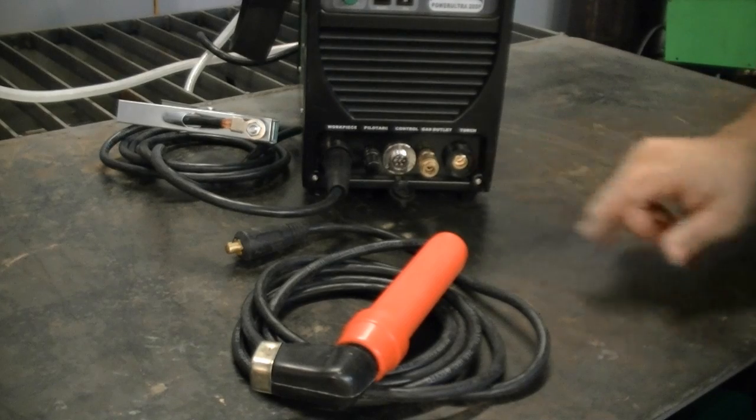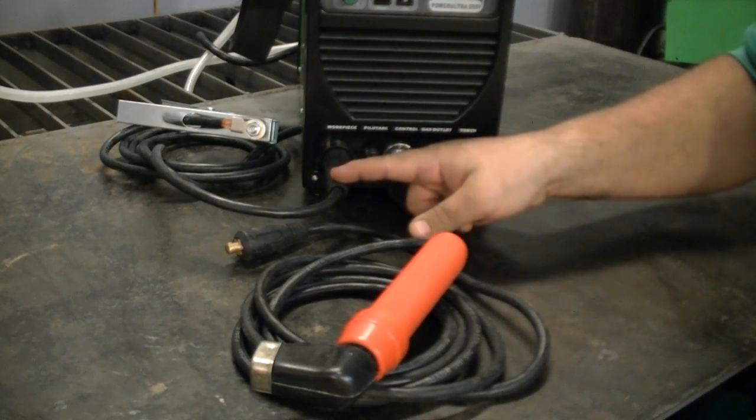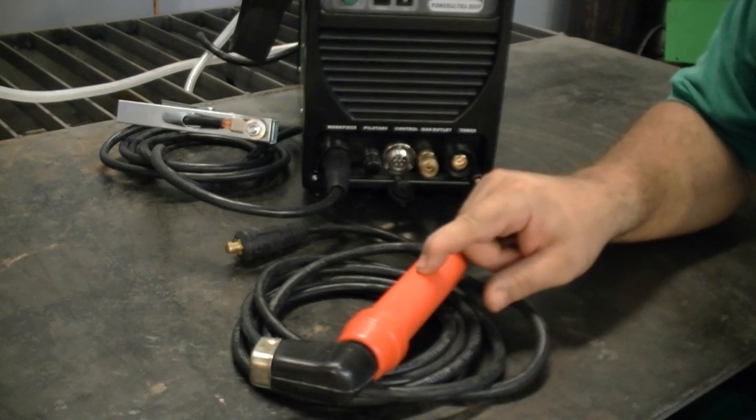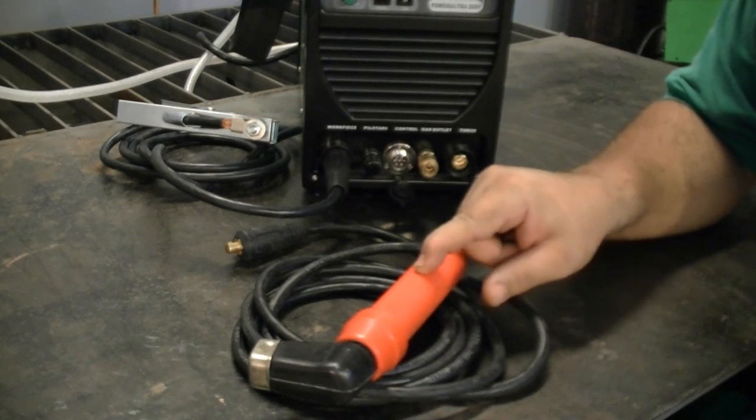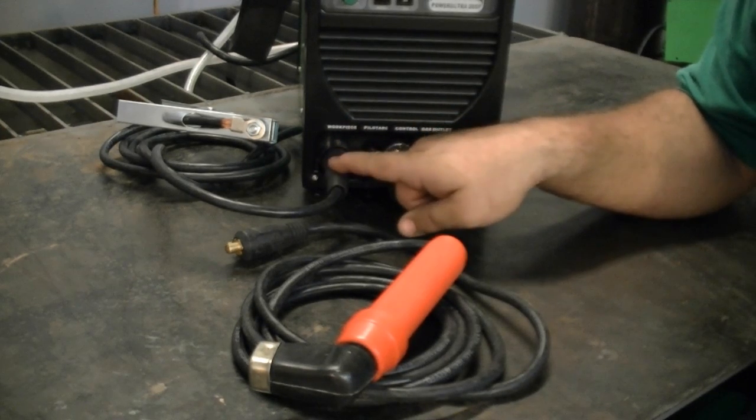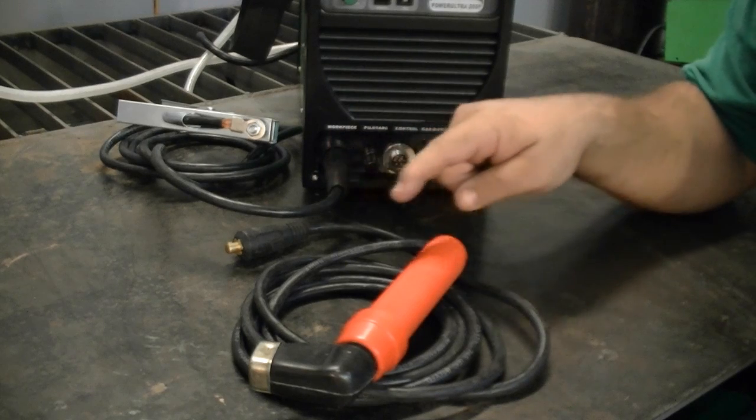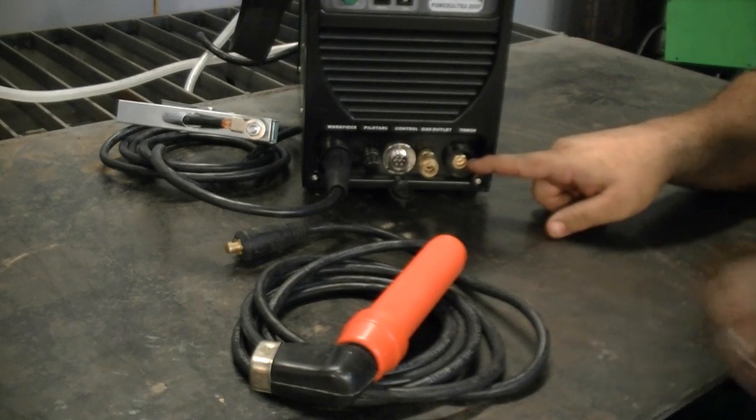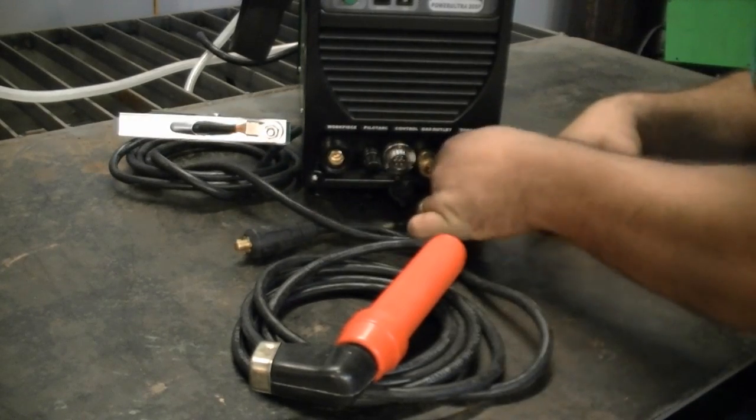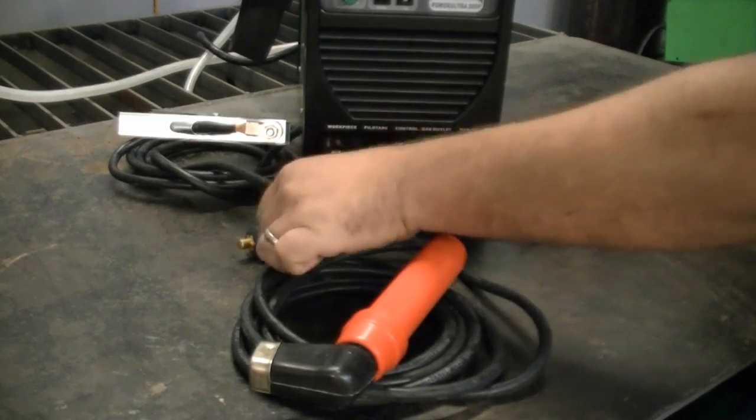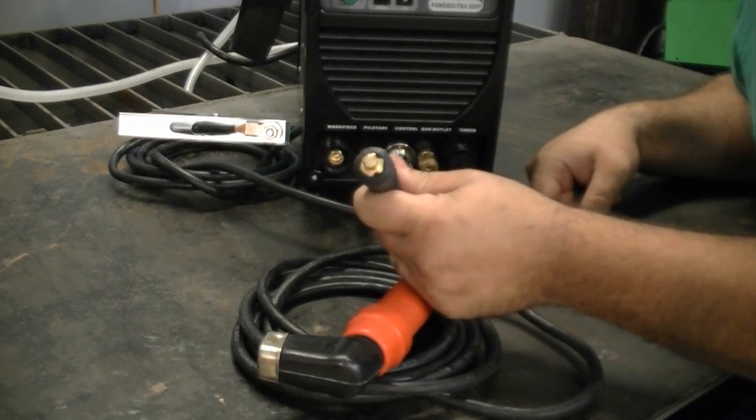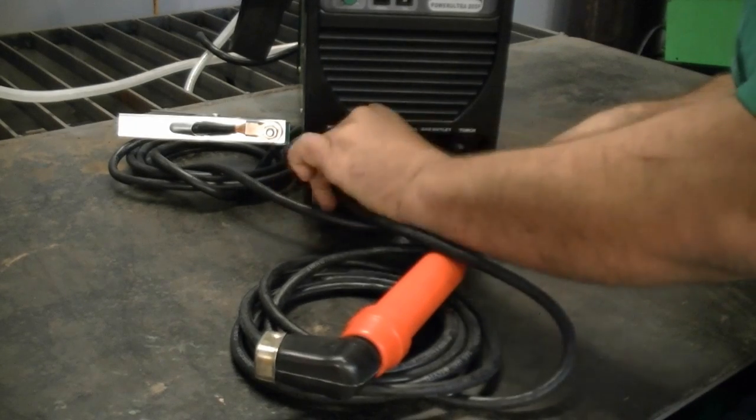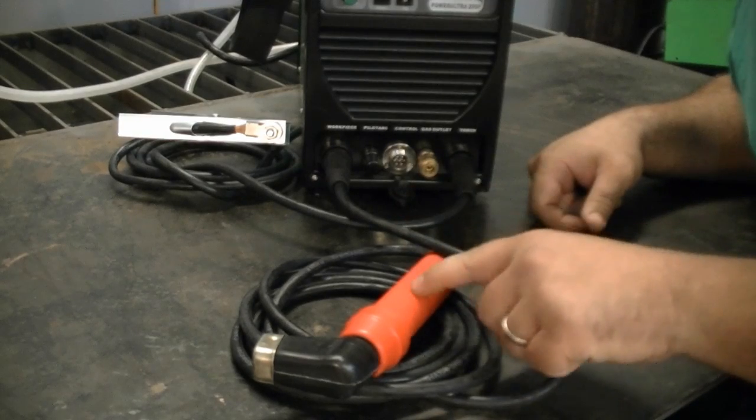We've disconnected the plasma cutting torch, and we've left the work clamp attached here to make a point. When you're welding with stick, you're going to weld with DC electrode positive. Now, this happens to be our DC electrode positive over here where it says work piece. Now, for stick and stick only, you're going to take this work clamp and move it over to the right side, so we're going to do that now. Now, of course, the only other connection you have with stick is simply the power cable, and you're going to connect it over here. This is going to seem backwards at first, but trust me, this is the way you connect stick.